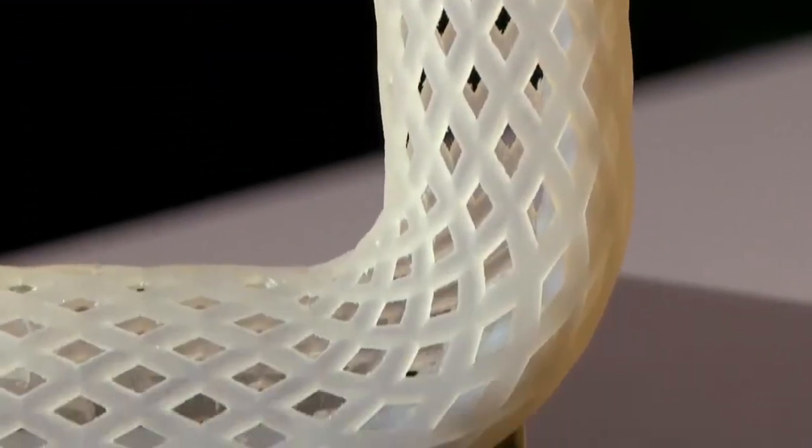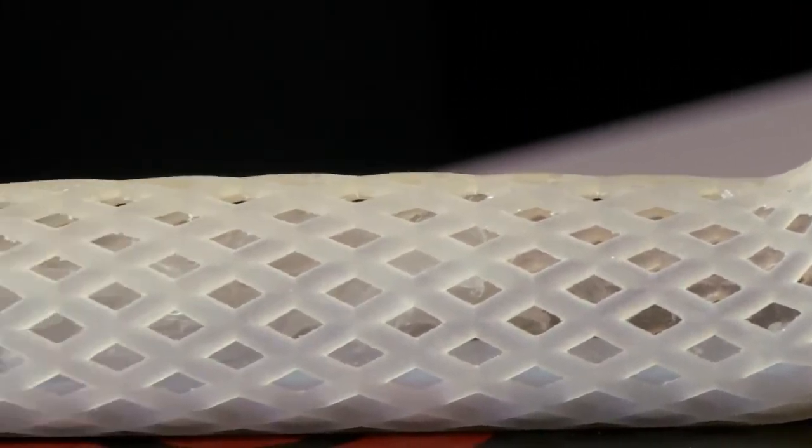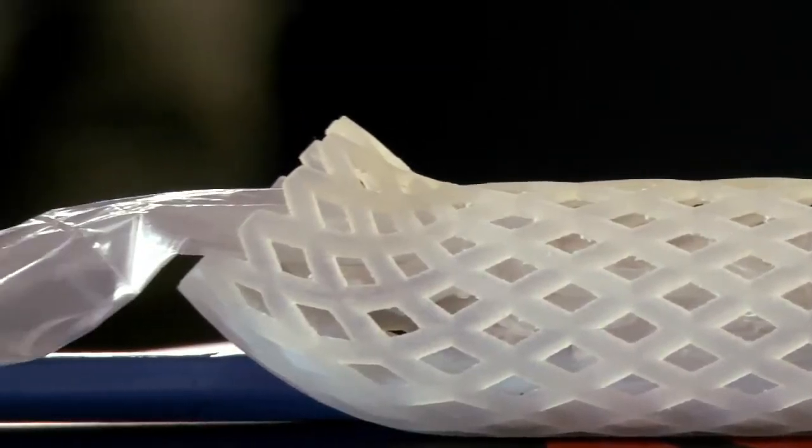The endoscopic insertion requires no general anesthesia, no incisions, and no tissue damage. The natural C-shape anatomy helps keep the sleeve in place and blocks food absorption without damaging the intestine.